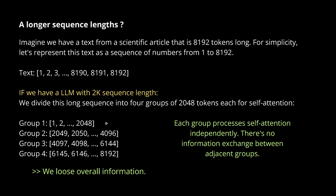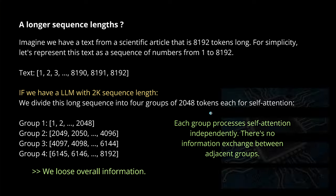What is the better solution? If we lose overall information from non-connected groups limited by the sequence length of our transformer architecture, what is the simplest fix? If you have unlimited money, unlimited access to thousands of GPUs, and unlimited time, you go the classical way: you fully fine-tune the whole system to a context length of 100,000 tokens. Very expensive, but it works.